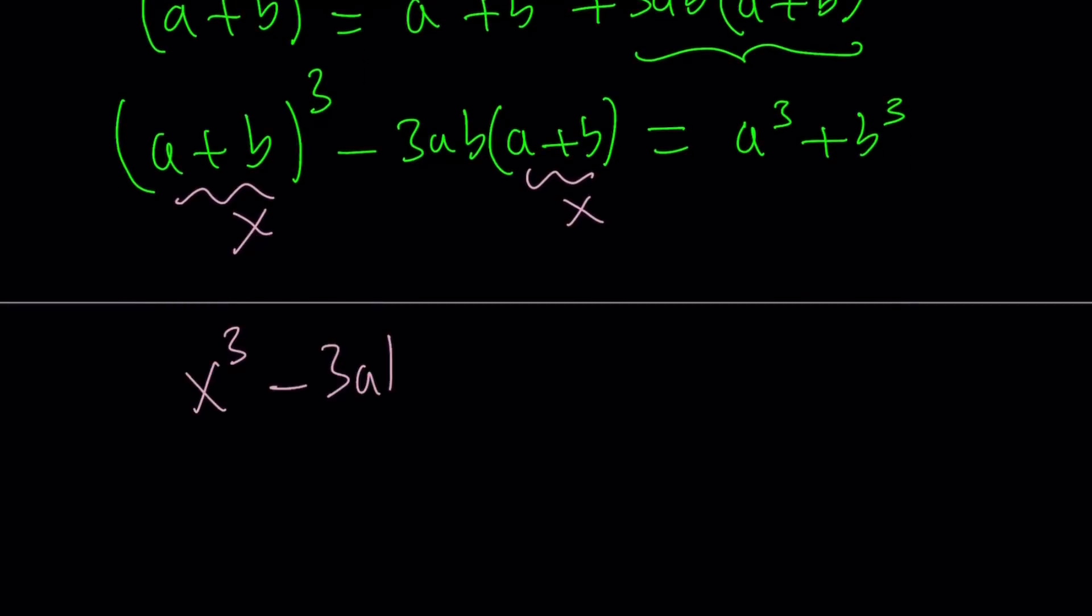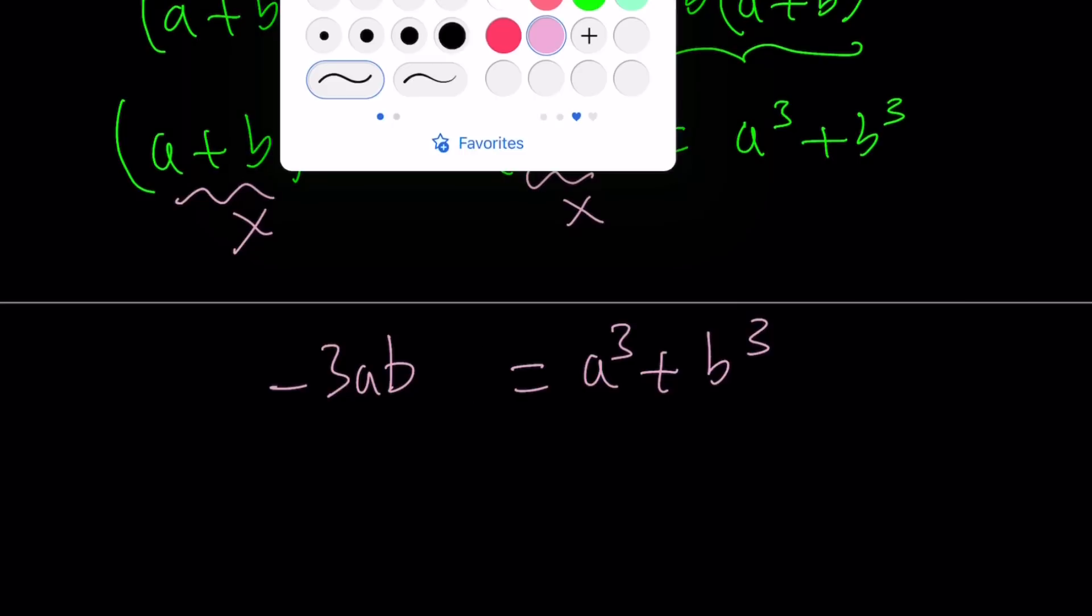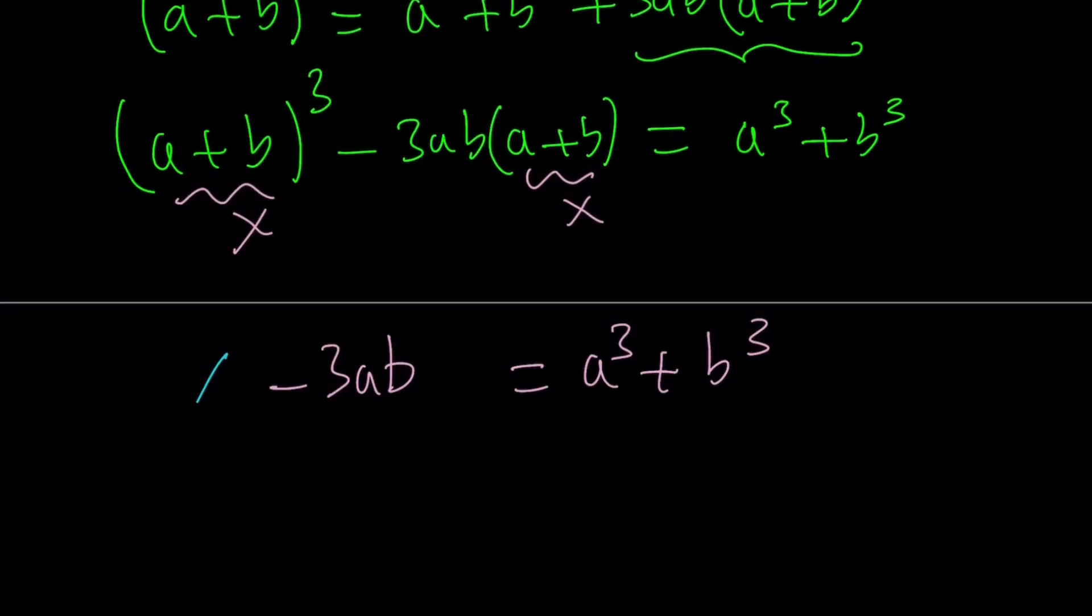And then I come up with a cubic equation: x³ - 3abx = a³ + b³. And I can kind of show you, write these a little differently to indicate that yes, this is indeed a cubic equation.